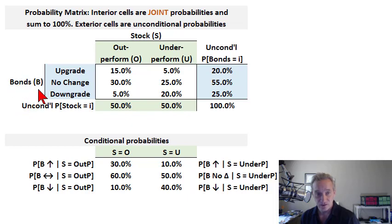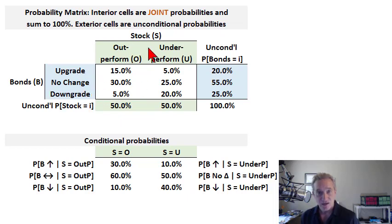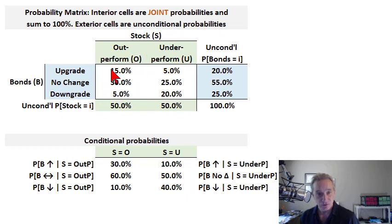Bond, which we'll say is denoted B, can either be upgraded, no change, or downgraded — a random variable with three possible outcomes. And the stock can either outperform or underperform, so that's a random variable with only two outcomes. Three times two is six, so there are six joint possible outcomes.